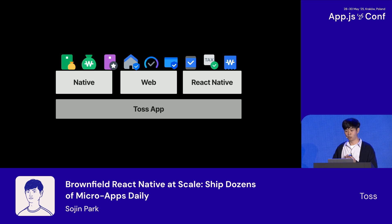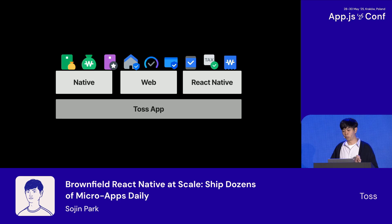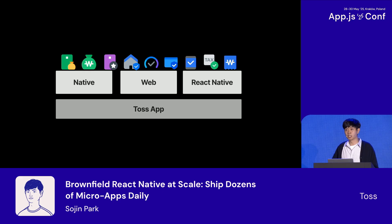As a super app, we operate hundreds of different financial services, each with different teams, different timelines, and technical requirements. Some services were built natively, others used web views, and we needed to add React Native into this mix. Coordinating development across all these technologies at scale became our biggest challenge.